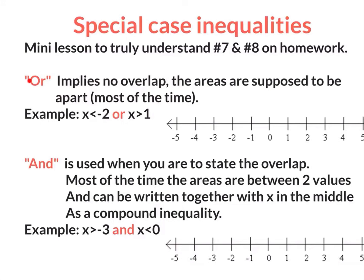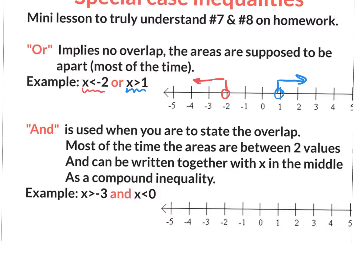The word OR, most of the time, implies no overlap — implies that the areas are apart. So if you graph x is less than negative 2 — open dot at negative 2, less than is to the left — and x is greater than 1 — open dot at 1, greater than is to the right — that makes sense because the word OR means going that way or that way, the areas are apart. The word AND, most of the time, implies that the areas are together. If you graph x is greater than negative 3 — open dot at negative 3, greater than is to the right — and x is less than 0 — open dot at 0, less than to the left — the areas are together. The word AND: it's between here and here.